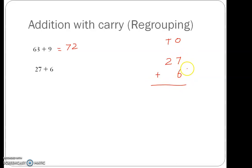7 plus 6, after 7, 8, 9, 10, 11, 12, 13. We put 3 under the ones place, 1 we take as carry forward. 1 plus 2, after 1, 2, 3. So the sum that we get is 33. So 27 plus 6 is 33.